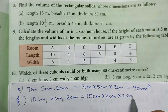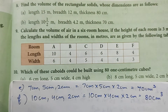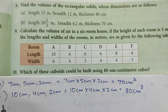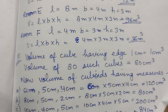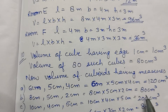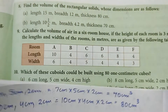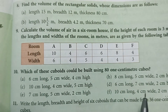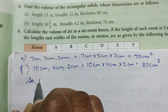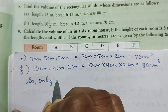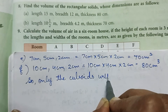Volume of cuboid F is 10 into 4 into 2 — 4 times 2 is 8, and 8 times 10 is 80 centimeter cube. So if we look at cuboid B and cuboid F, both have a volume of 80 centimeter cube. So only two cuboids can be built using 81 centimeter cubes — the answer is cuboids B and F.